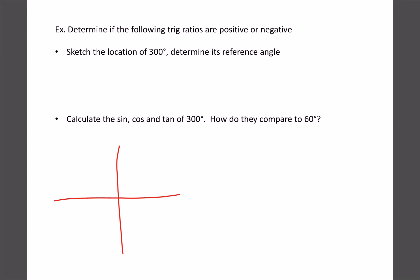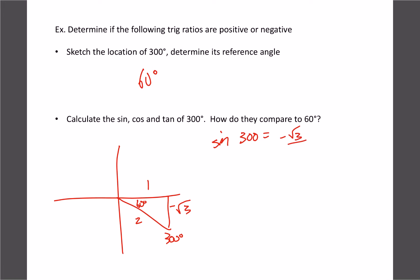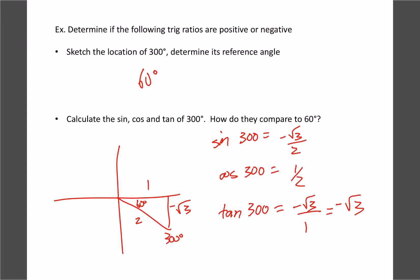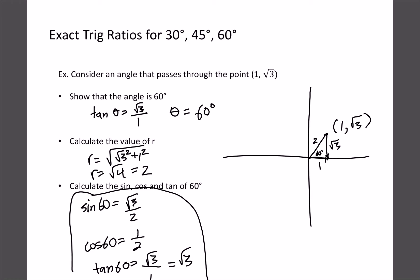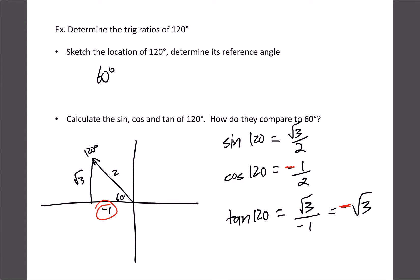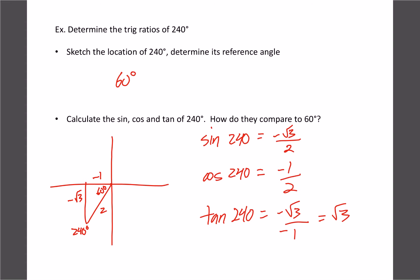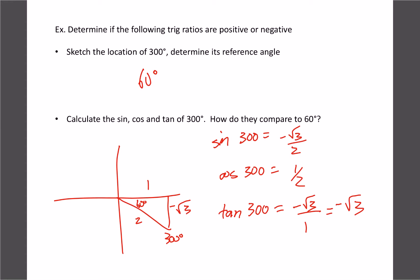For 300 degrees, we're in the fourth quadrant with a 60-degree reference angle. The coordinate is 1 over and root 3 down. Sine of 300 is negative root 3 over 2. Cosine of 300 is 1 over 2. And tan of 300 is negative root 3. So comparing all four quadrants: in quadrant 1 all ratios are positive; in quadrant 2 only sine is positive; in quadrant 3 only tan is positive; in quadrant 4 only cosine is positive. The actual ratio values are all the same.